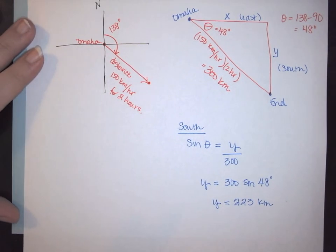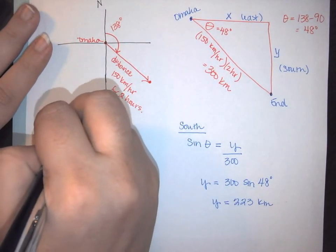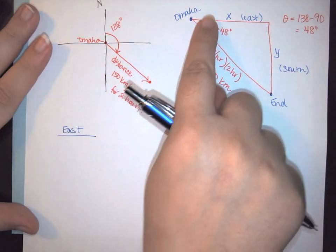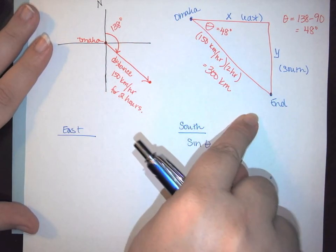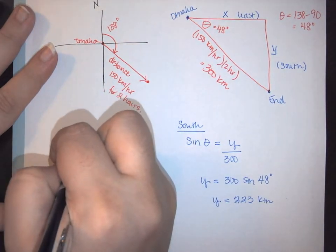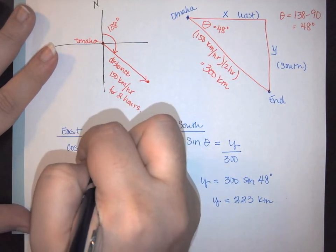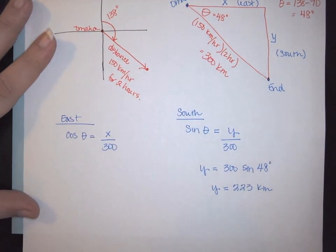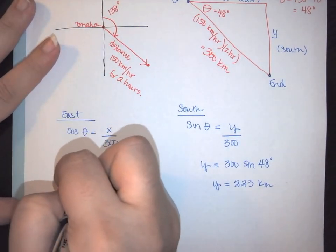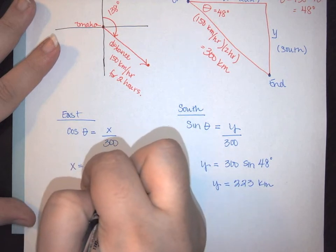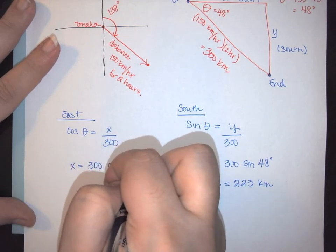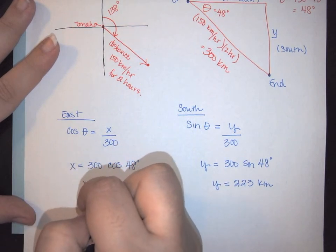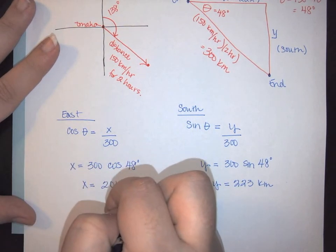Now we can do the exact same thing for east. So in order to find east, we have adjacent over hypotenuse. So here we would use the cosine of my angle is equal to x over 300. So plug everything in, we know that x is equal to 300 cosine of my 48 degrees. So we get that x is going to be 201 kilometers.